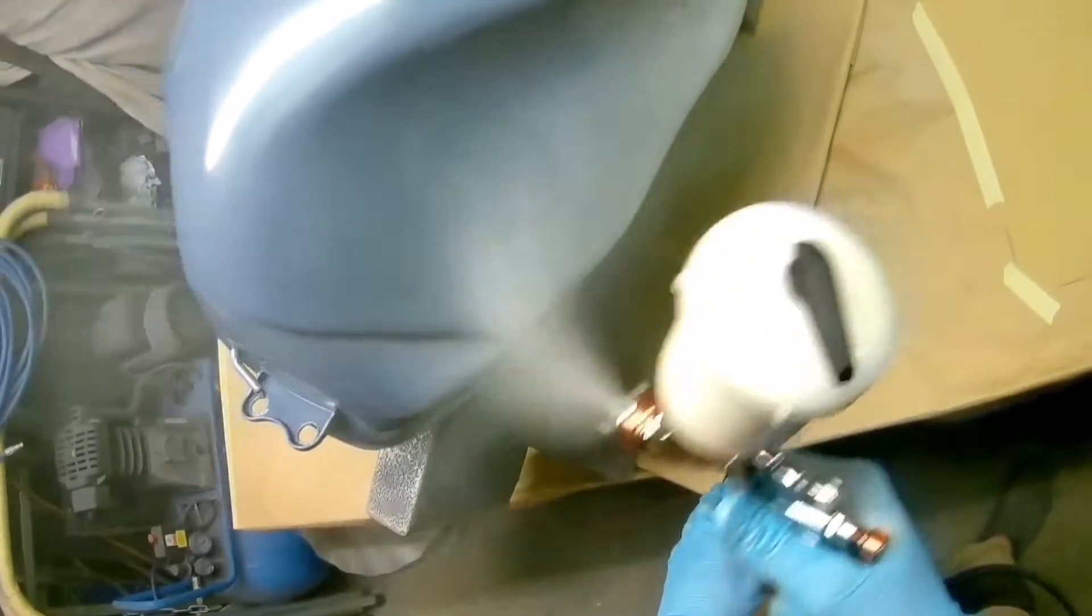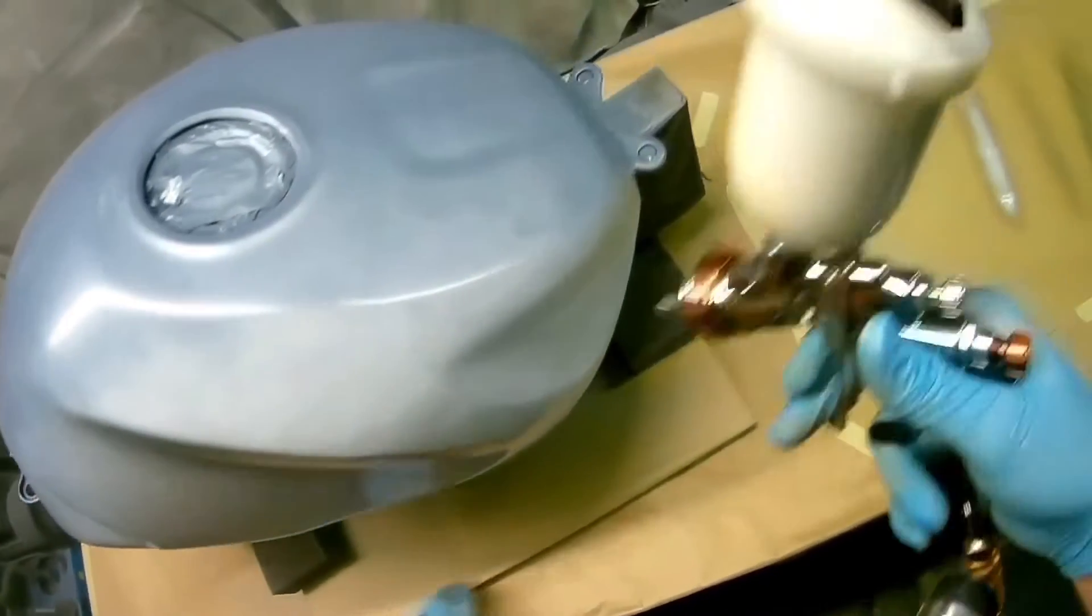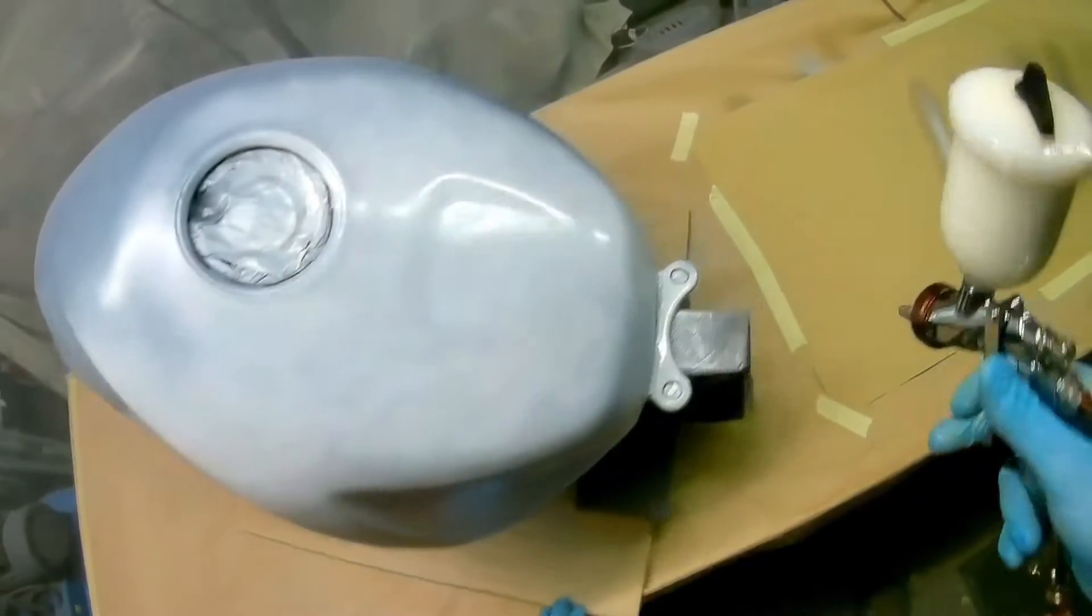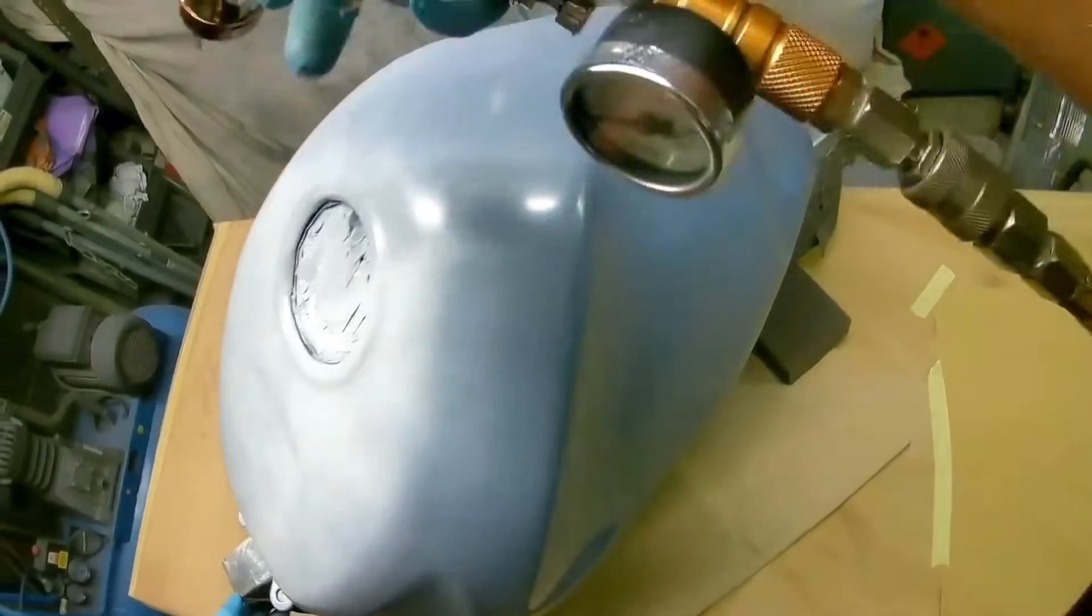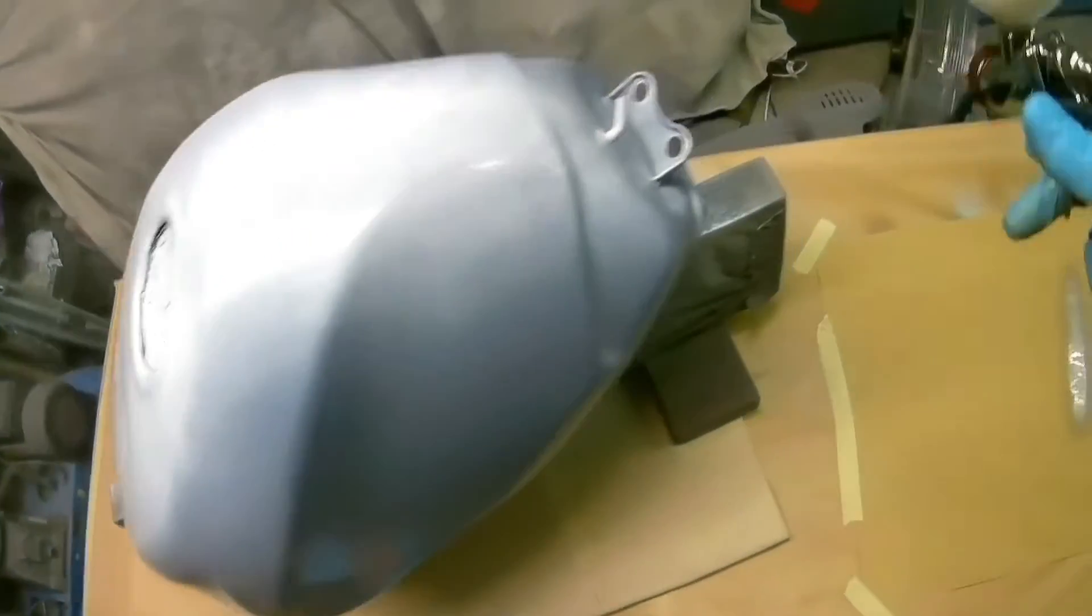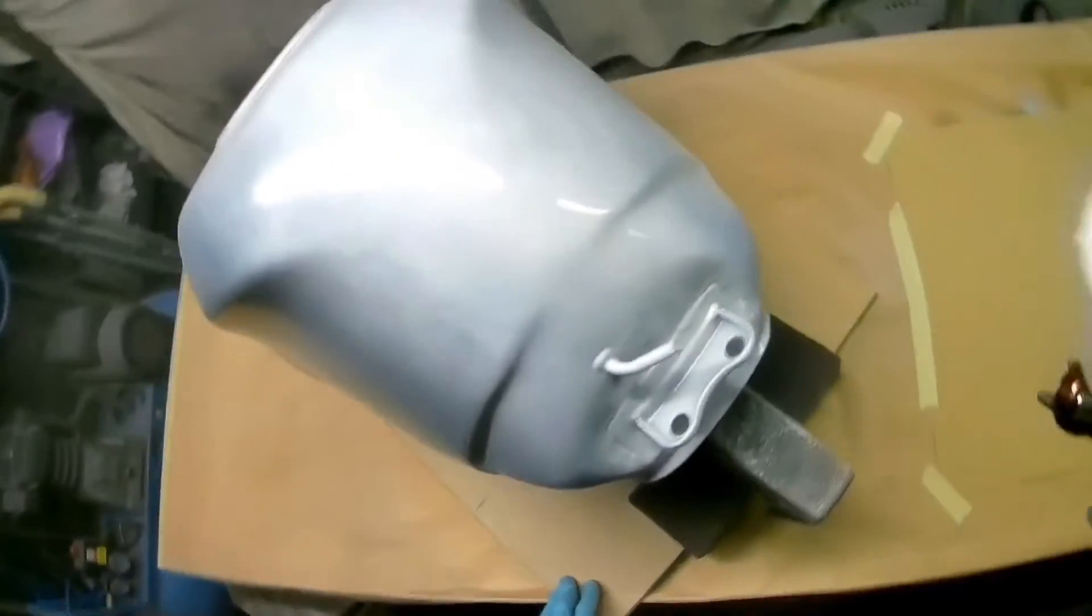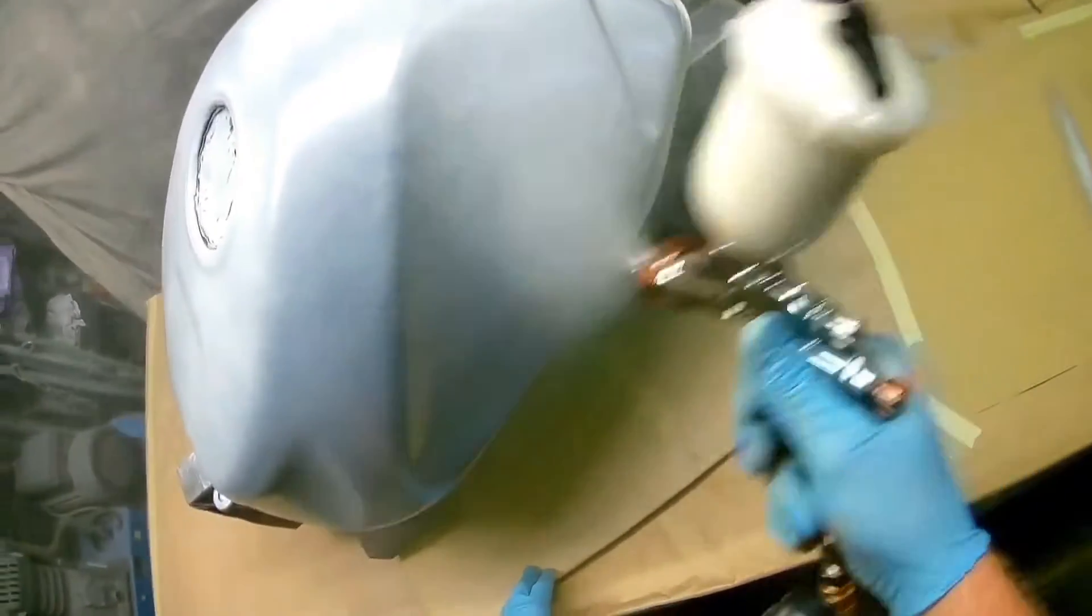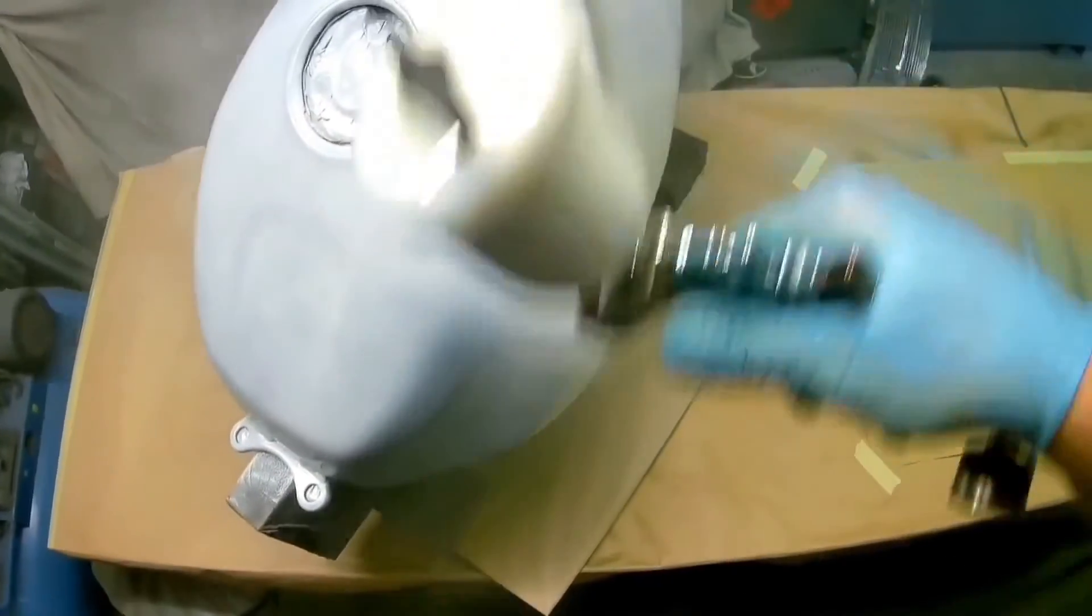It will lay base coat down really, really well. It will lay clear coat down really, really well. And we're using effectively three lots of base coat on this. I only actually did this as an experiment, and it's because I've got the paint for nothing. I've got a litre of each, being a three-stage, you get the ground coat, which is this white ground coat.